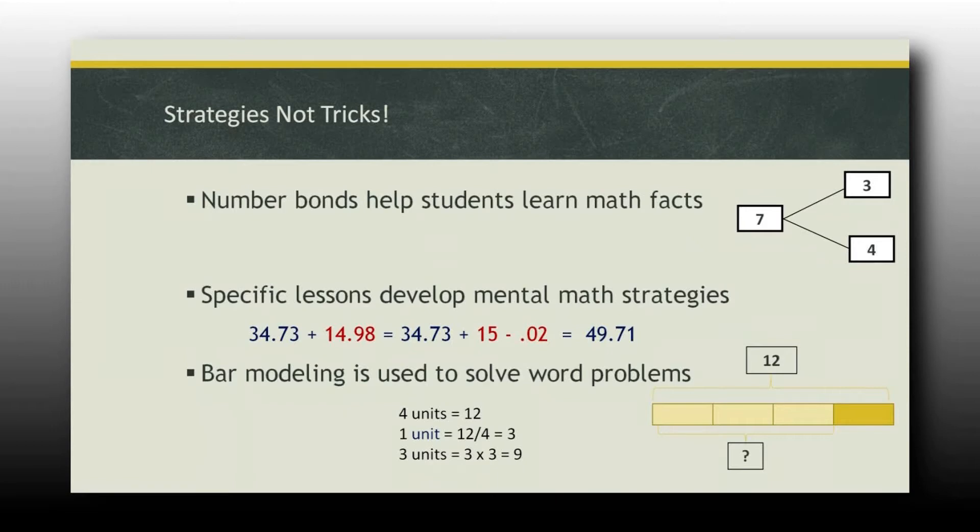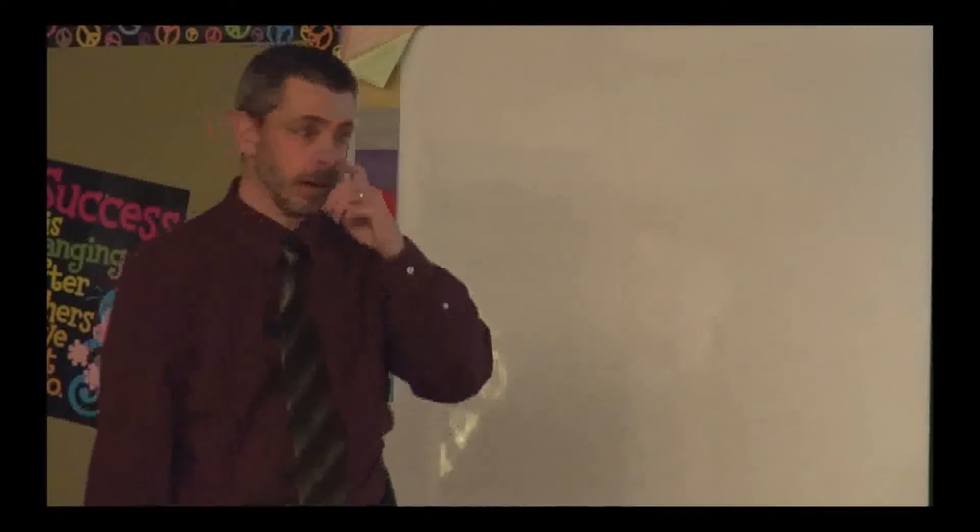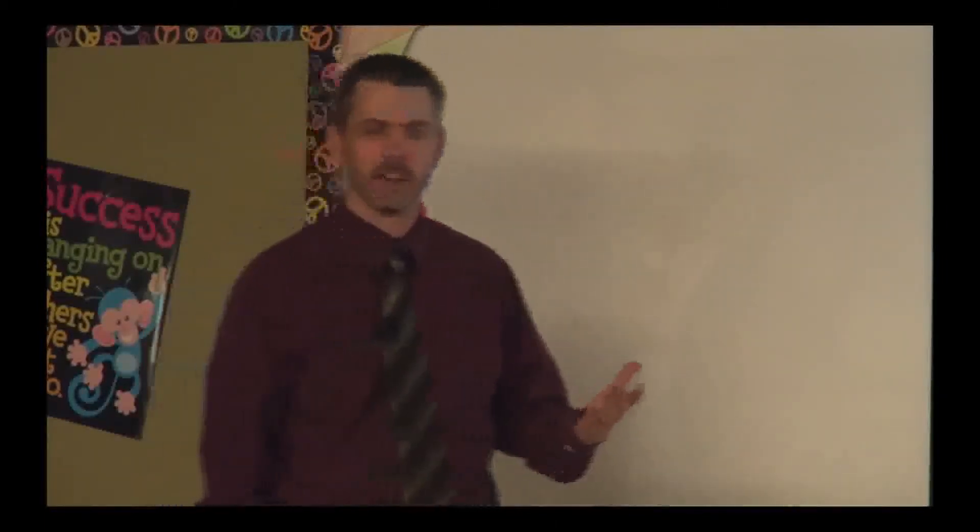But remember, we had two less than that. So we just got to take .02 away from that, two hundredths less. So now I have 49.71, and kids are good at it. They get that. They understand. Make groups of ten. They figure things out pretty quick. So it's a mental math strategy that they do.